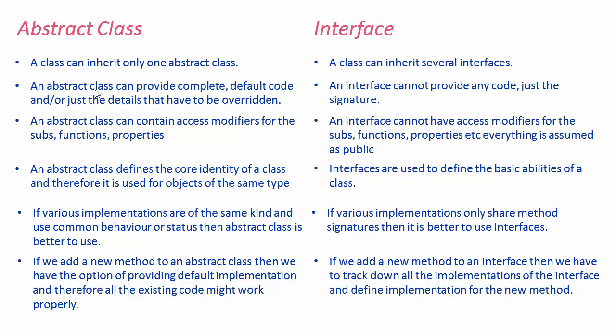An abstract class defines the code identity of a class — when we have similar types of objects, a specific abstract class serves the purpose. Interfaces are used to define the basic abilities of a class. If various implementations are of the same kind and same behavior, abstract class is better to use; if the implementations only share the method signature and the implementation differs in every case, then interfaces are better. Lastly, if a new method is introduced in an abstract class, we can provide a default implementation so inheriting classes are not affected — but if a method is added to an interface, all classes inheriting from it must implement that method. That's a big difference.